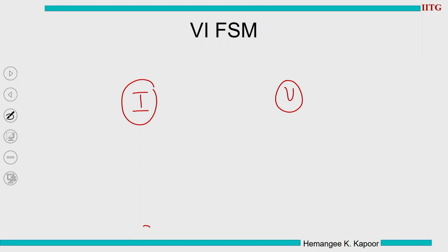If we are in the invalid state and the processor sends a read request, the block is invalid. We have to send a bus read request onto the bus telling that I want this data. When this bus read request goes, main memory will provide the data and once we get this block our next state becomes valid. When you have a processor read, you send a bus read request onto the bus, eventually get the data, and shift to the V state.